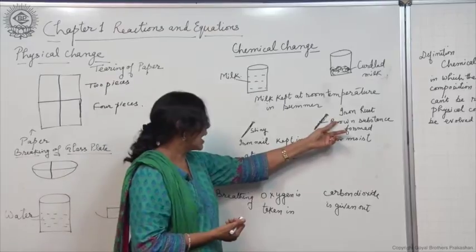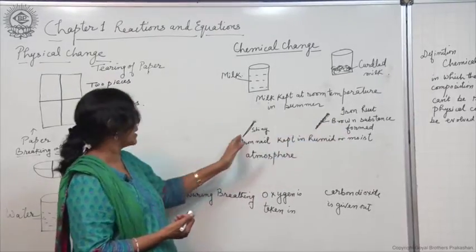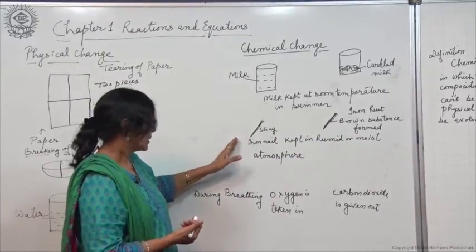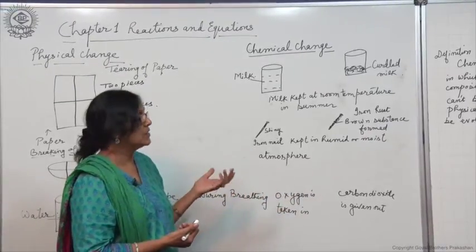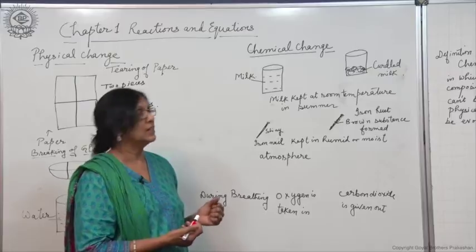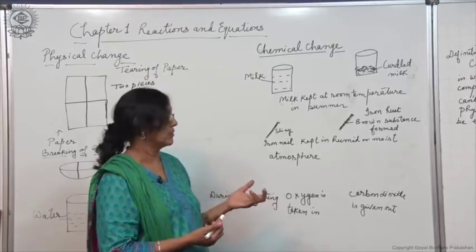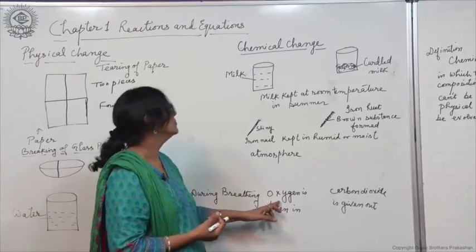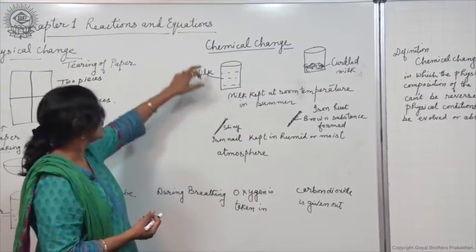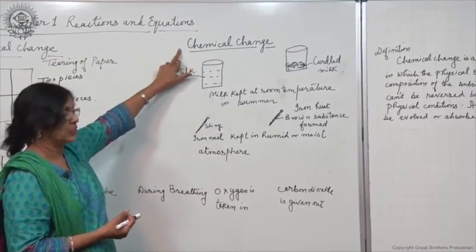Also, this iron rust cannot be converted back to iron. And also, carbon dioxide cannot be converted back to oxygen just by changing the physical conditions like temperature or pressure. We cannot get back oxygen again. So, all these are the examples of chemical change.